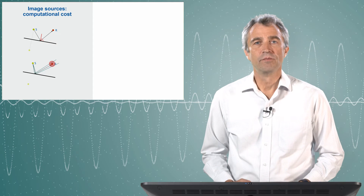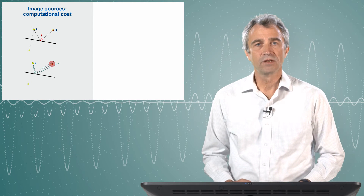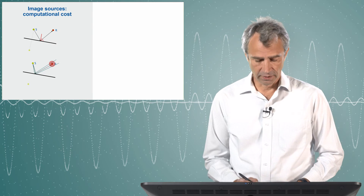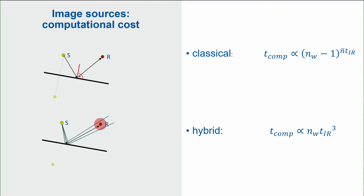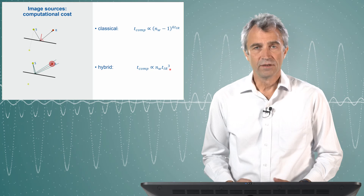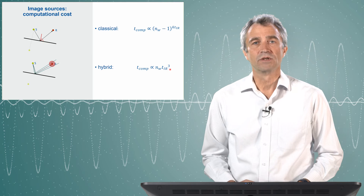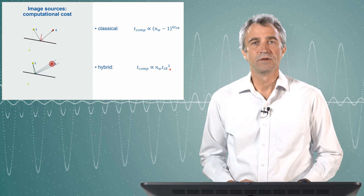We can talk about a combination of both approaches. We can construct an image source, but we can also find it by tracing. The basic difference is that the computational effort is very different. The computational time for the classical image source method increases with an exponential law with respect to the time in the impulse response. On the other hand, in a hybrid method, finding image sources increases only with the third power of the length of the impulse response. This means for longer impulse responses, the hybrid method has very significant advantages.